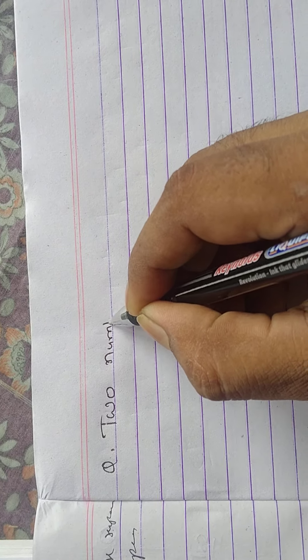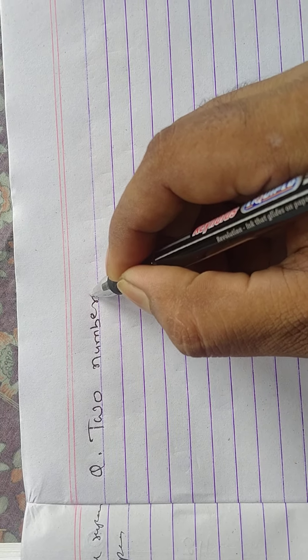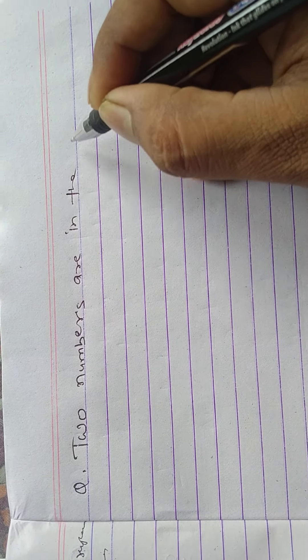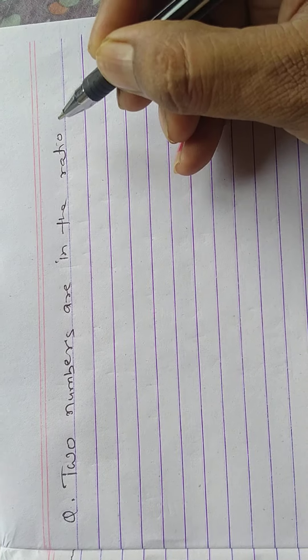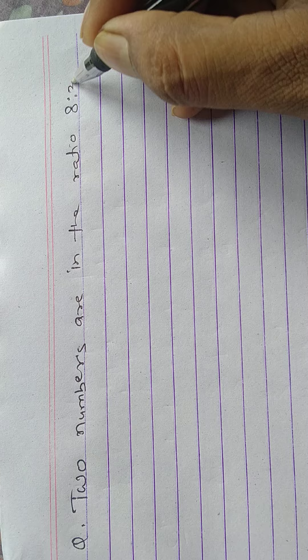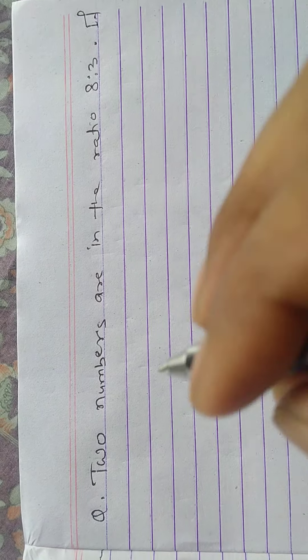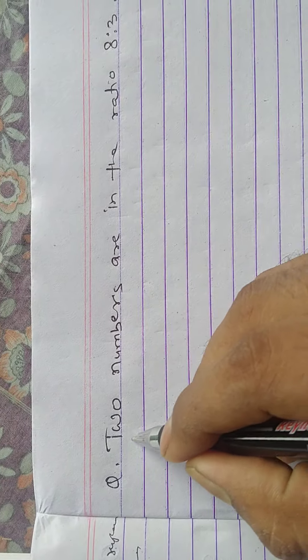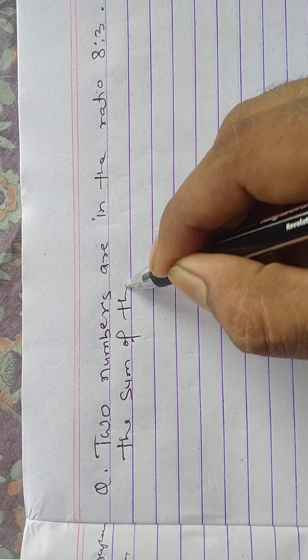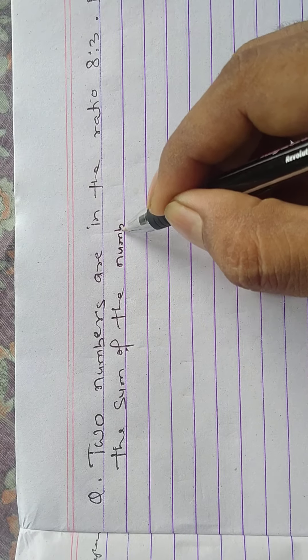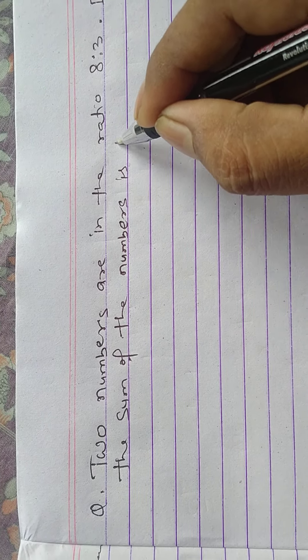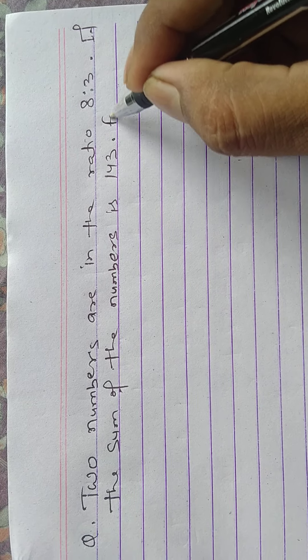Two numbers are in the ratio 8 to 3. If the sum of the numbers is 143, find the numbers.